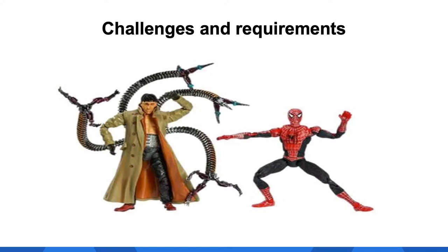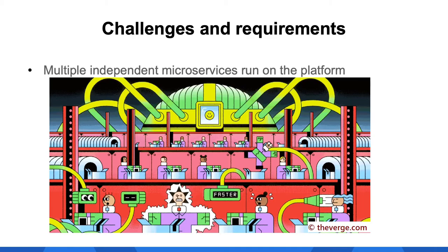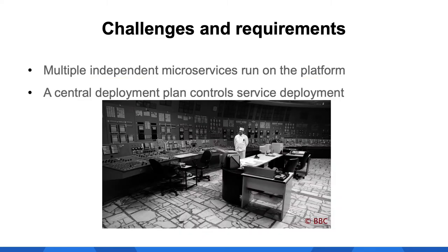Let's talk about some of the challenges and requirements for capacity management at Workday. Multiple independent microservices run on the platform, and each may need to increase their capacity at a different time, for example when releasing a new feature. A central deployment plan controls the service deployment. In the past, the deployment plan was stored in a SQL database and requests to update it were submitted by Jira. This process was error-prone, and engineers responsible for capacity management would only check if the total amount of RAM, CPU, or disk was enough, without taking into account how fragmentation and deployment order affect capacity.